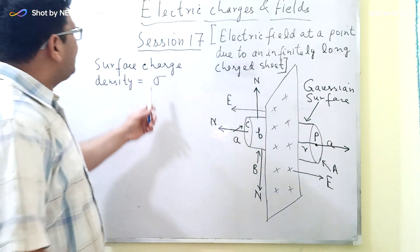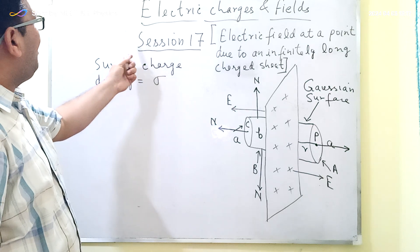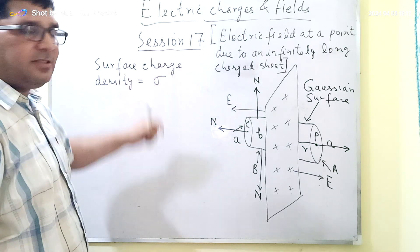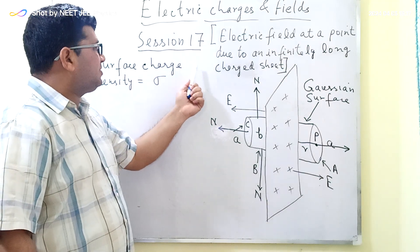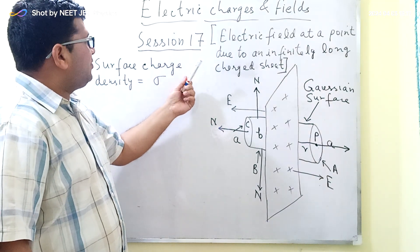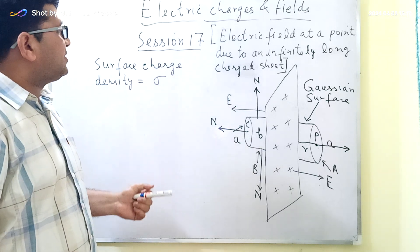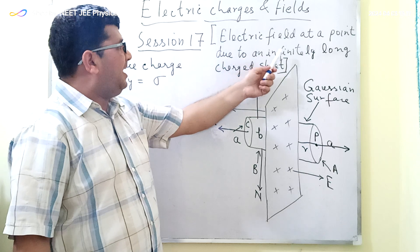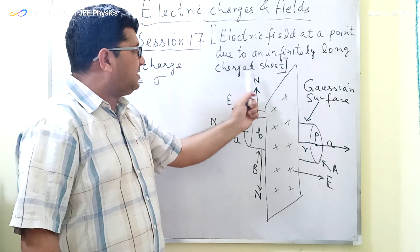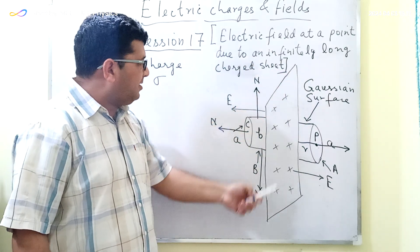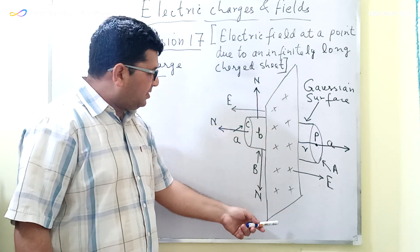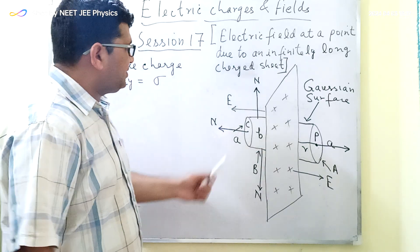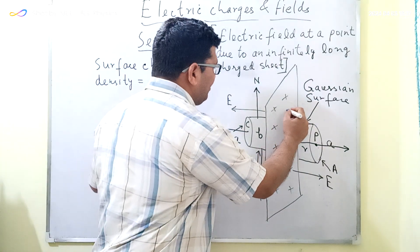Welcome back, students. This is session 17 from the playlist of Electric Charges and Fields, and this session is a continuation of session 16. Today we will be discussing the electric field at a point due to an infinitely long charge sheet. Here I have drawn one infinitely long charge sheet — this is one section of it — and this sheet is considered to be positively charged.